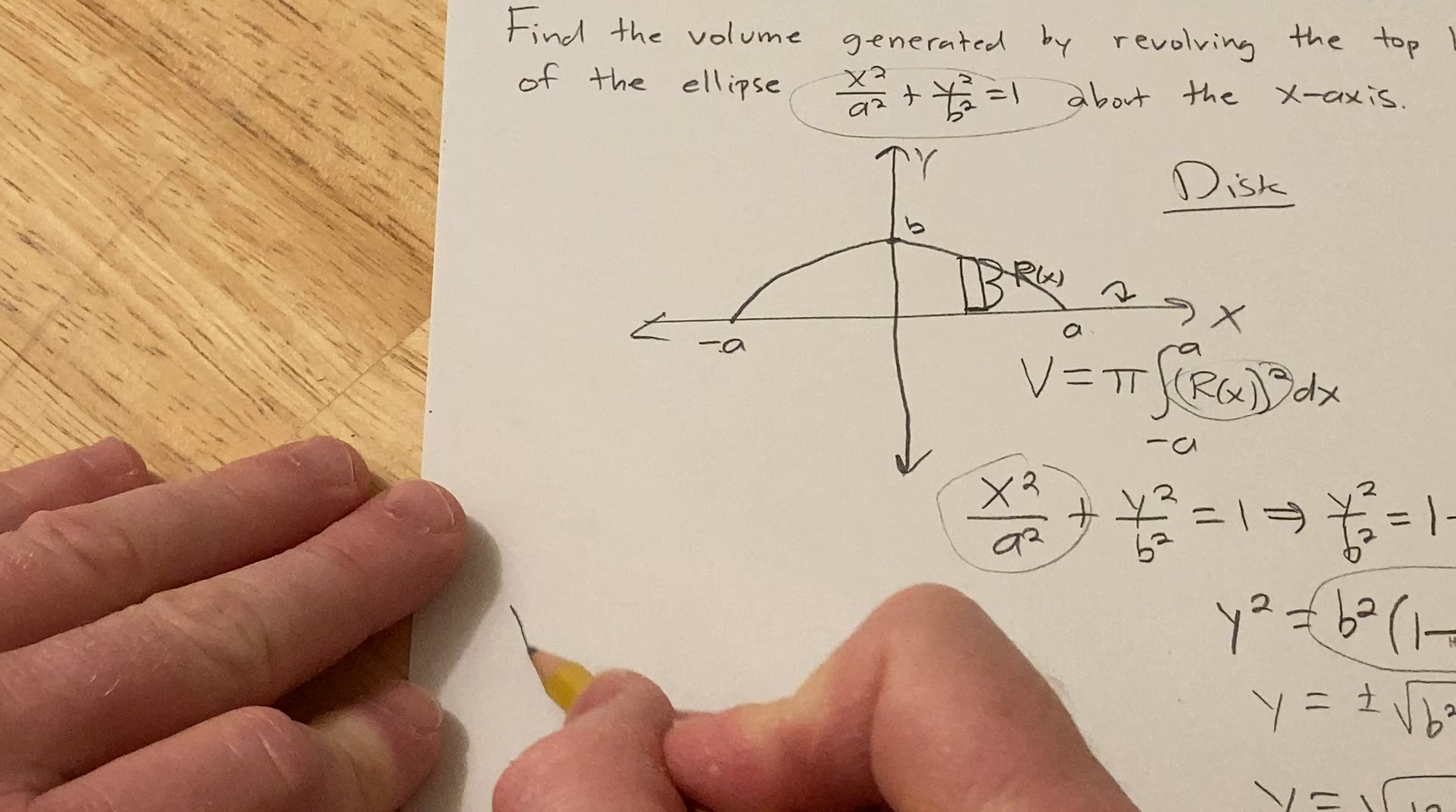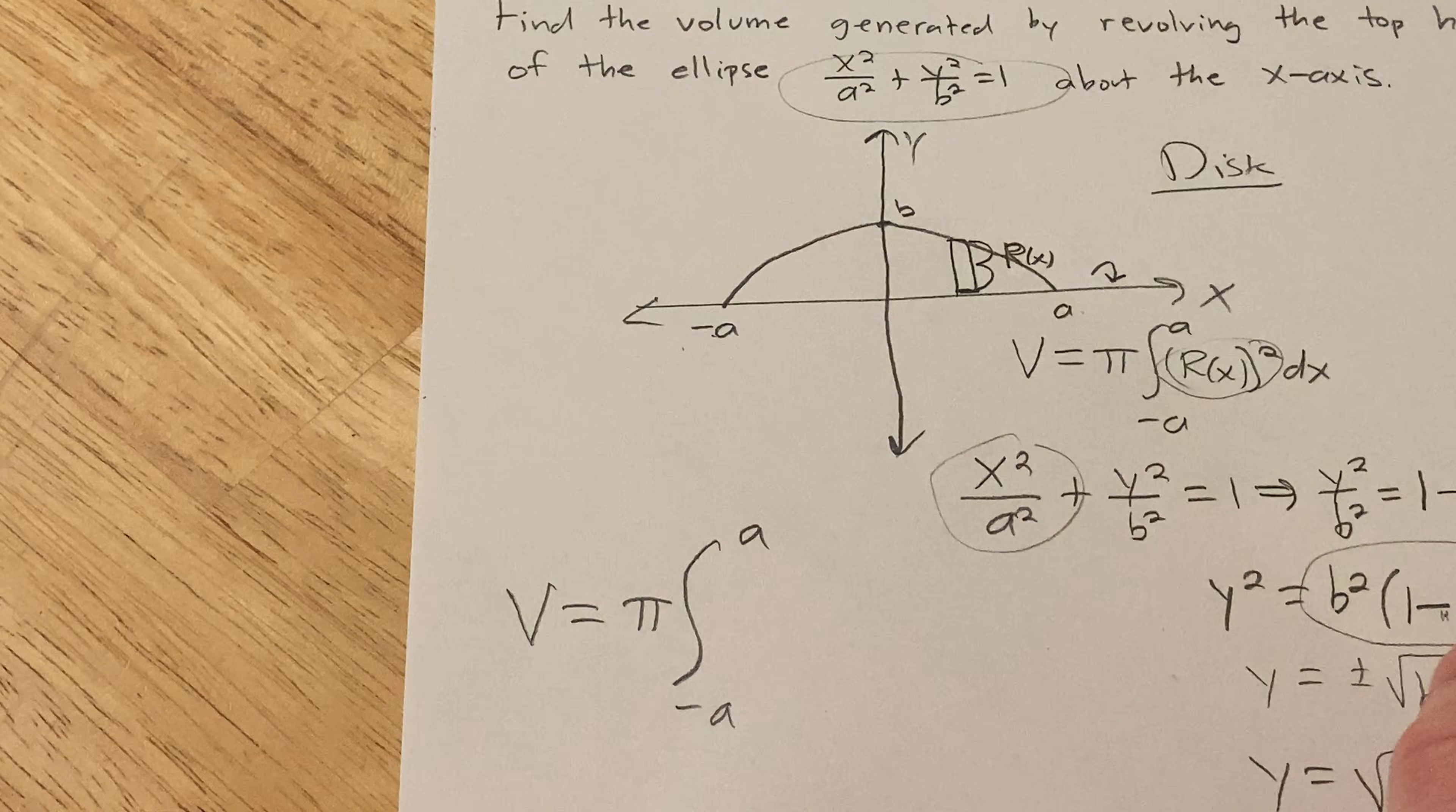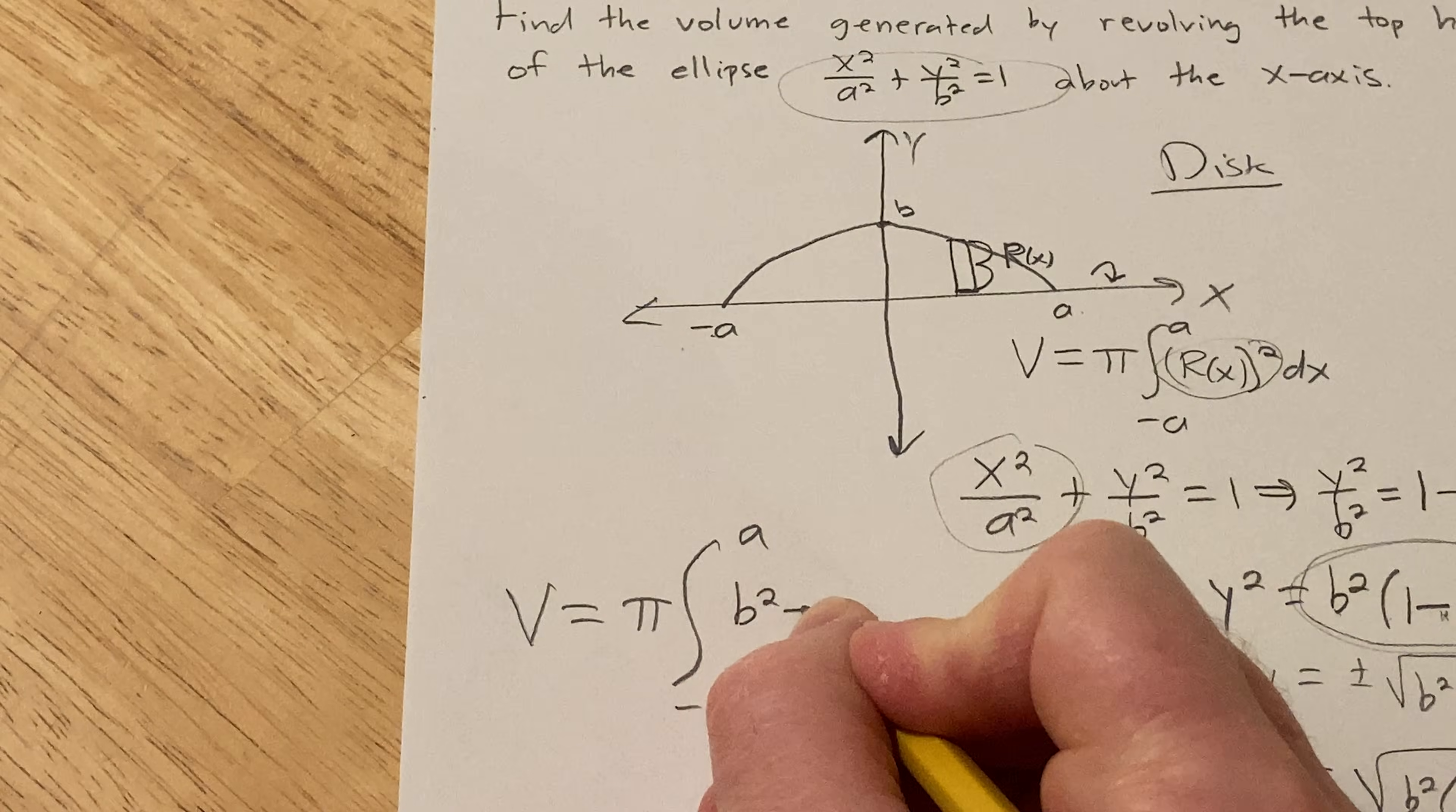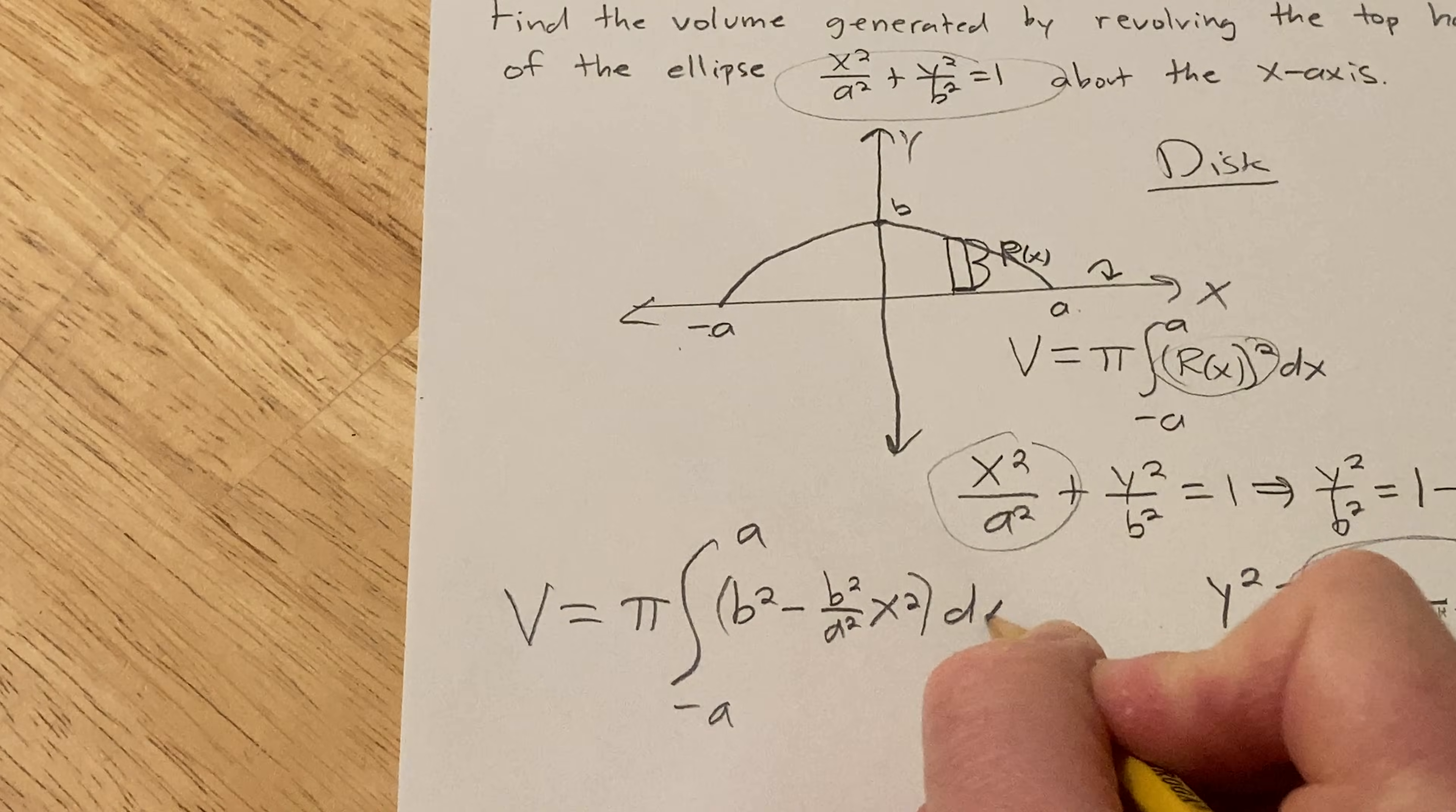Okay, so let's come over here and work it out. So v is equal to pi times the integral from negative a to a. And it's R of x squared. So it's just this quantity here. So it'll be, I'm going to distribute the b squared. So it'll be b squared minus b squared over a squared, and then x squared dx.